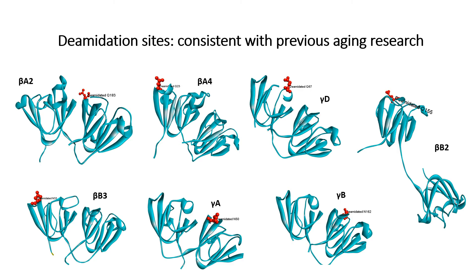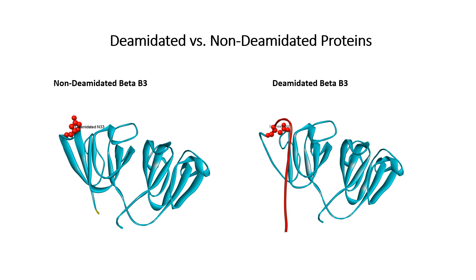After determining which proteins are being deamidated and the sites at which deamidation occurs, we used molecular modeling to visualize where these deamidation sites occur. The deamidations are all external on the protein, which is important because in order for this reaction to occur spontaneously, it needs immediate access to water — and that is confirmed in each of our models. For one example, we modeled the potential effects of a deamidation on crystallin beta B3. On the left is the non-deamidated form and on the right is the deamidated beta B3 at N33, showing that the entire highlighted red chain is affected, changing the nature of the protein.